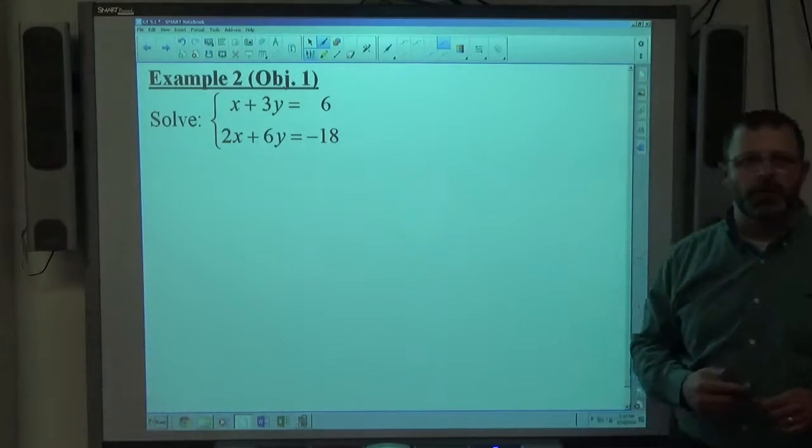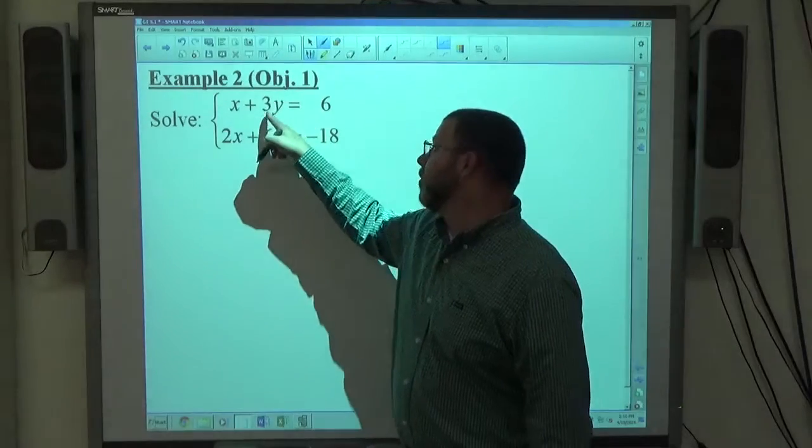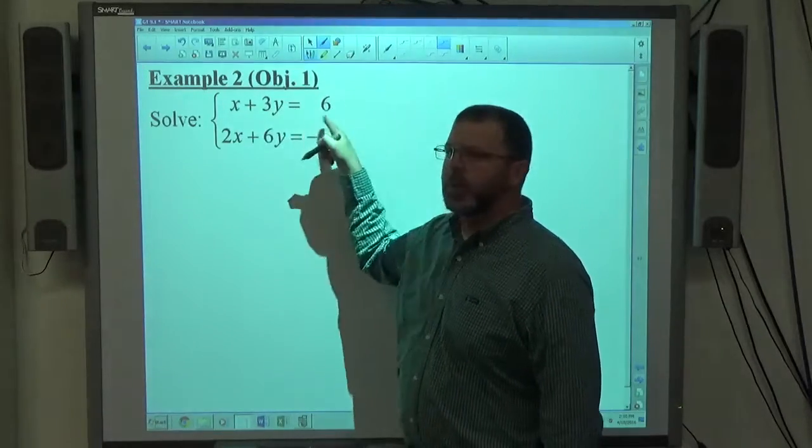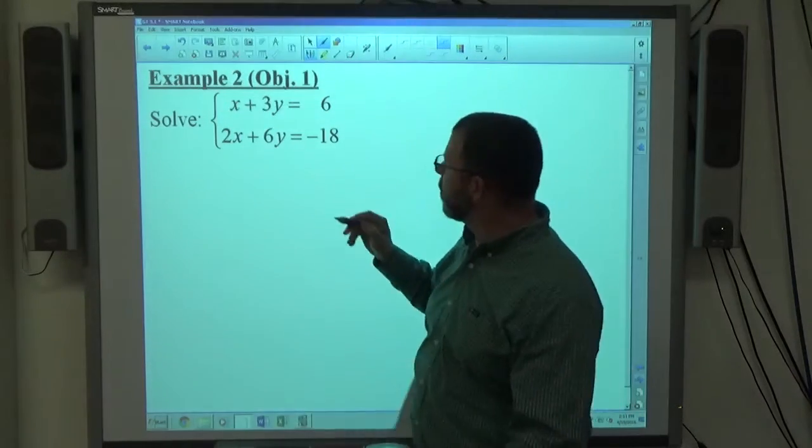Elimination tends to be the more efficient way to do those when they're set up like that. I could also do substitution. If I move the 3y over here, x equals 6 minus 3y, I can substitute in. Take your pick how you want to do it. I personally prefer elimination when the structure calls for it.